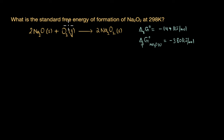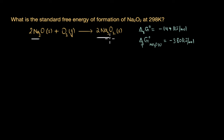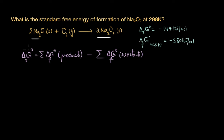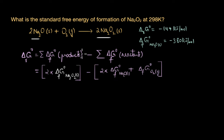The next question asks us to calculate the standard free energy of formation of Na₂O₂ at 298 K. We are given the standard Gibbs free energy change for the reaction and the standard free energy of formation of Na₂O = −380 kJ/mol. To find ΔG°f of Na₂O₂, we use: ΔG°rxn = sum of ΔG°f of products minus sum of ΔG°f of reactants.